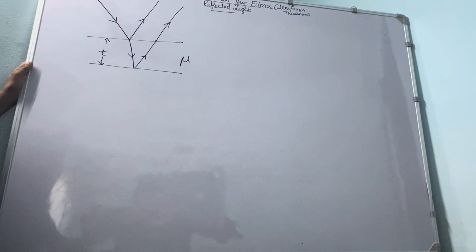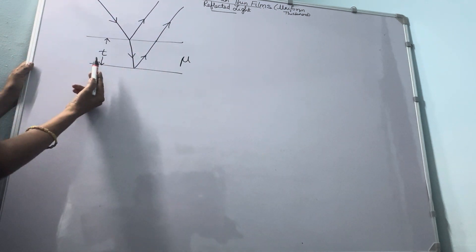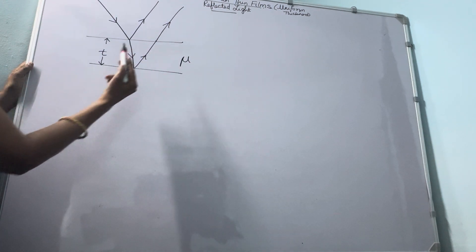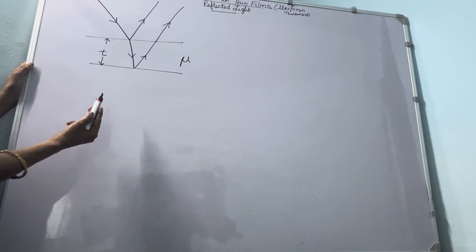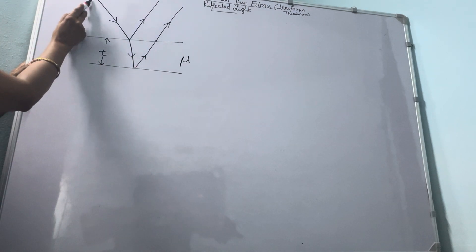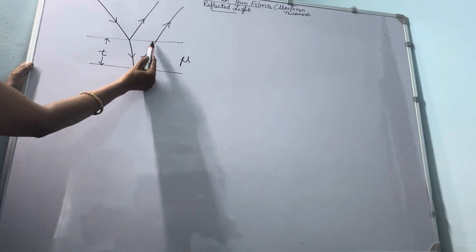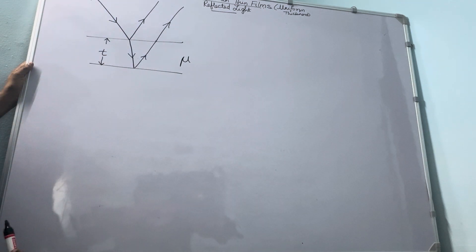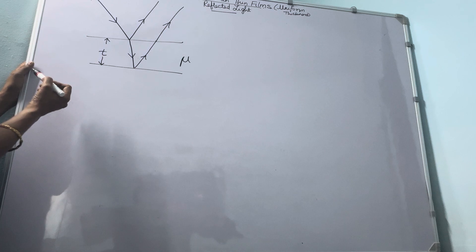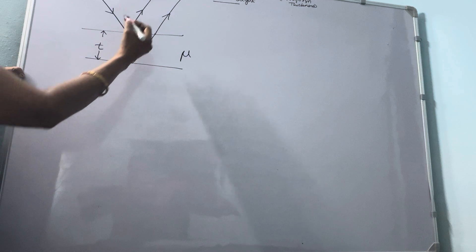This is our ray diagram for interference of thin film of thickness T and refractive index mu. The necessary conditions for a fringe pattern to occur in interference are: a monochromatic source of light, coherent sources, and a path difference. Let us see how we will get that in this diagram. Now we will draw perpendiculars in order to find an expression for path difference.